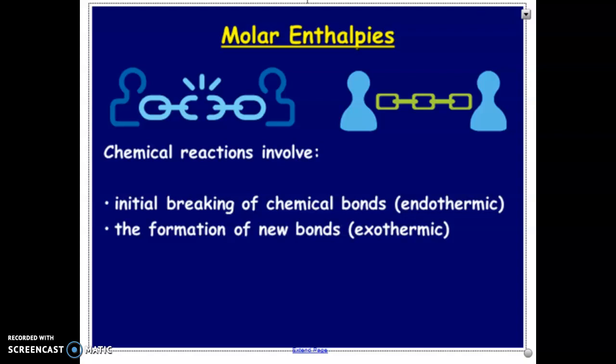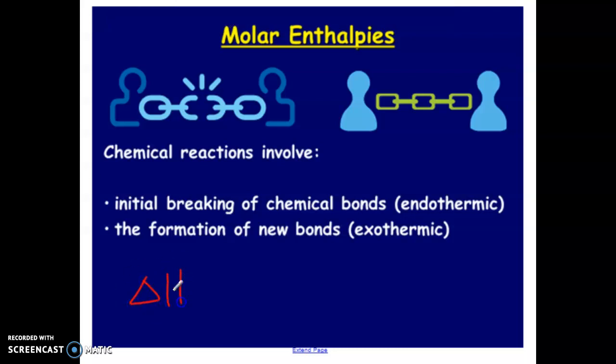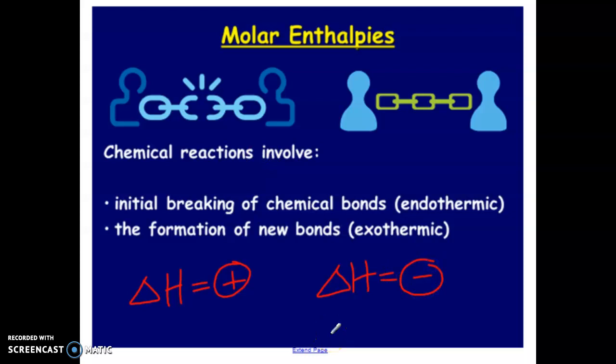We're continuing with our look into thermodynamics at a term called molar enthalpy. We already mentioned what enthalpy is — this is the change in energy throughout some sort of chemical process or chemical reaction. So delta H, if we are dealing with an endothermic process, has a positive value. The delta H of an exothermic process would have a negative value if we're dealing with energy being released from the system.